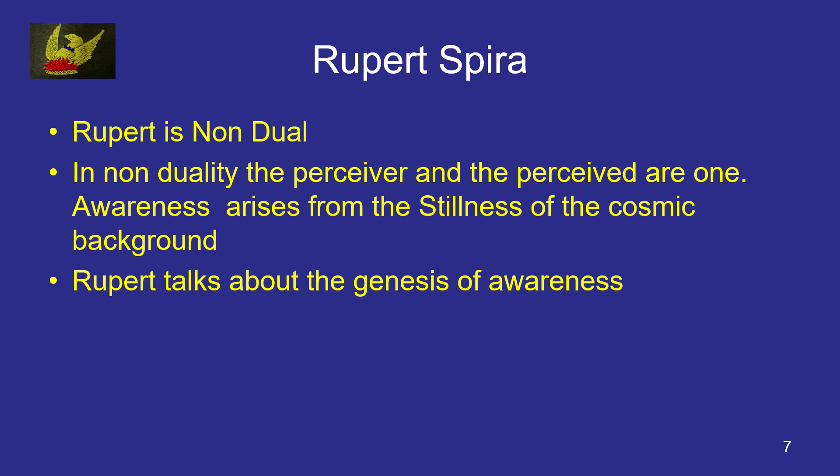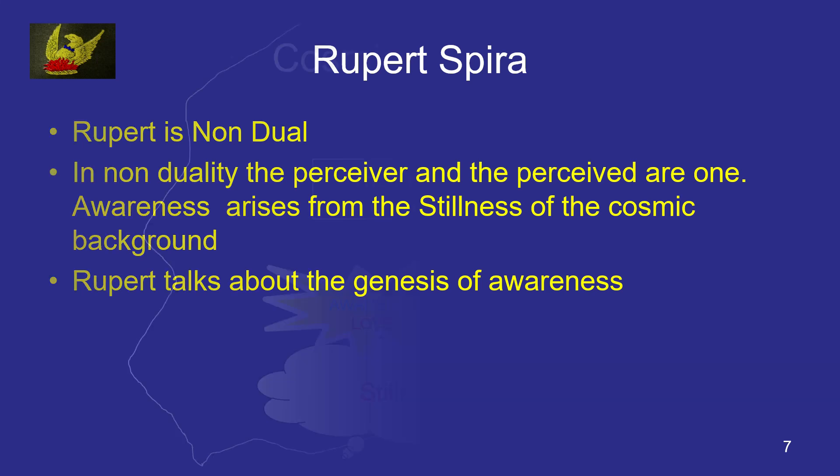That's what Rupert Spicer says. Rupert talks about the genesis of awareness — he's talking about the genesis, or consciousness, of the actual moment in time. Please note: there is no past and no future, there is only the present moment. And please note, the cosmic background generates the moment, which is then experienced.